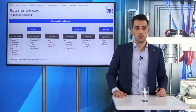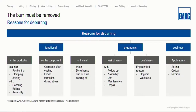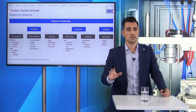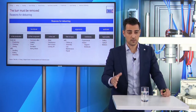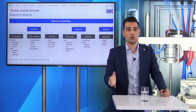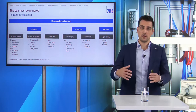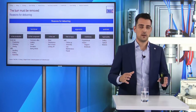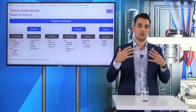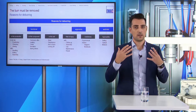The next reason is ergonomical: the risk of injury. When you think about work tools and their sharp edges, there is a risk of injury for the grippers and for the work tools. Of course the aesthetic reason: when you have metallic parts full of burrs, it is absolutely a no-go. Think about medical parts — none of us want to have a knee implant that is full of burrs. It must be perfectly deburred so that we are safe and have a good feeling about a truly high-quality deburred part.